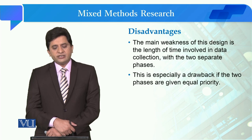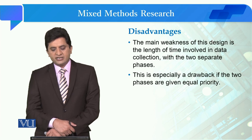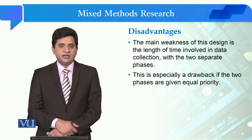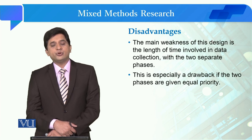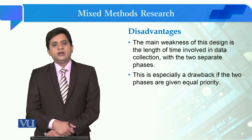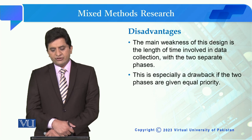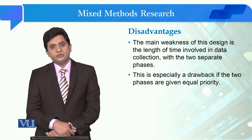اگر ہم اس کی disadvantages کی بات کریں تو main weakness of this design is the length of time involved in data collection with two separate phases. یہ اگر آپ properly دو studies کریں — پہلے quantitative data collection، پھر qualitative — تو it takes a lot of time, جو کہ overall all mixed method research designs کا ایک issue ہے۔ This is especially a drawback if the two phases are given equal priority — اور یہ اور بڑھ جاتا ہے جب دونوں کی weight equal ہو تو یہ اور زیادہ time consuming ہوتی ہے۔